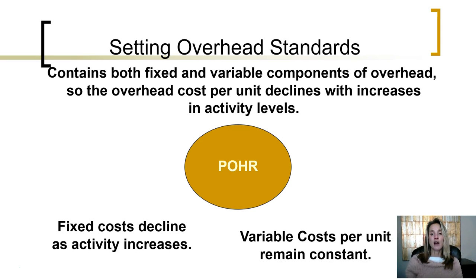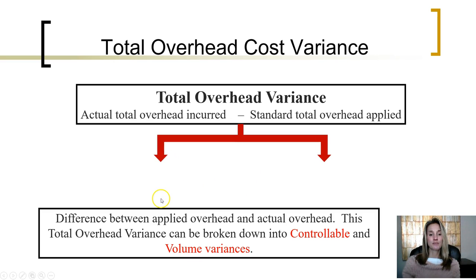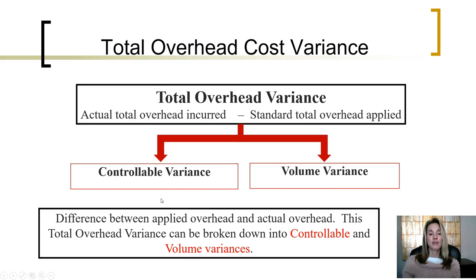So the overhead cost per unit declines with increases in activity levels. The fixed costs decline as the activity increases, but on a per unit basis, variable costs stay the same. To calculate the total overhead variance, we're going to be taking the difference between the actual total overhead incurred and the standard total overhead applied. That variance is broken down into two types: the controllable variance and the volume variance.